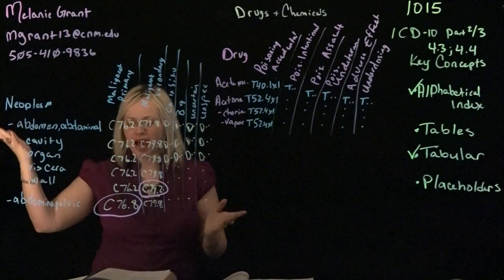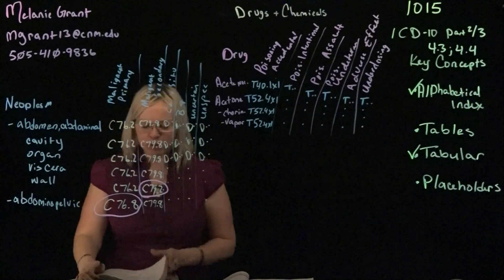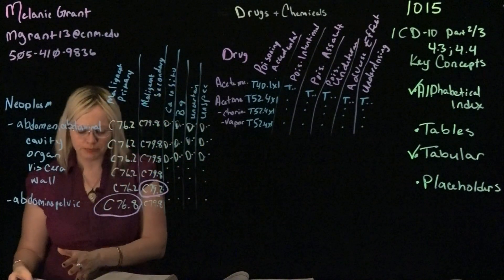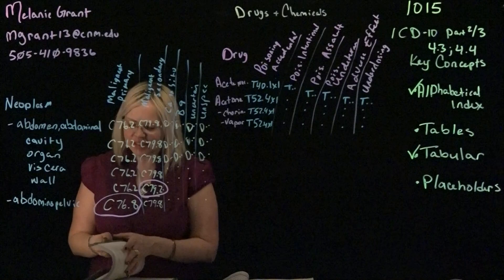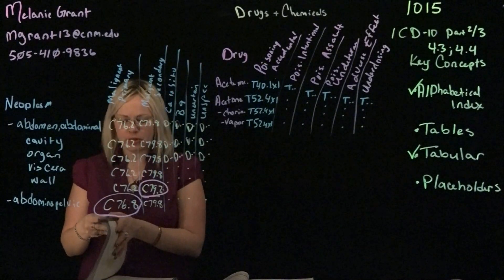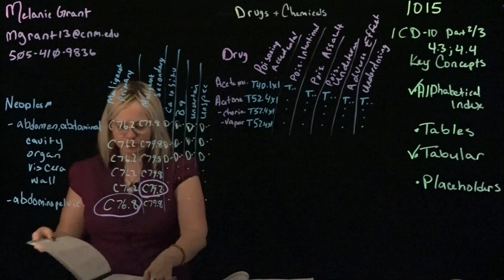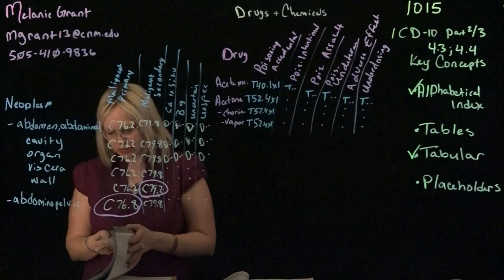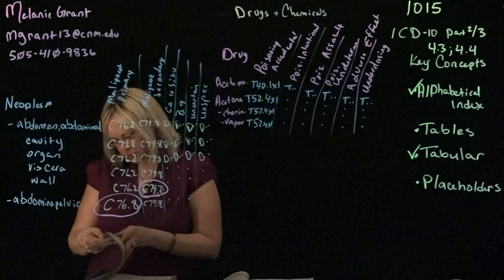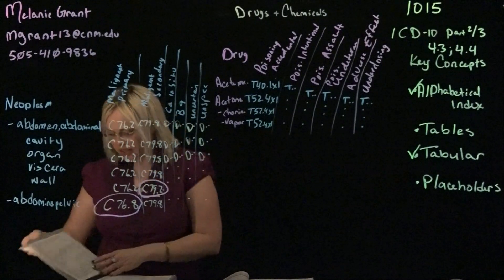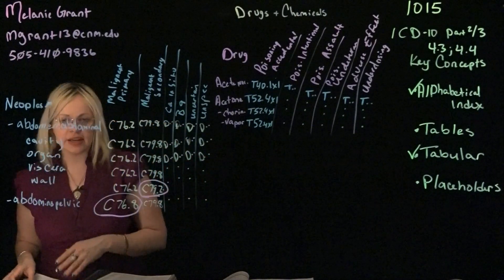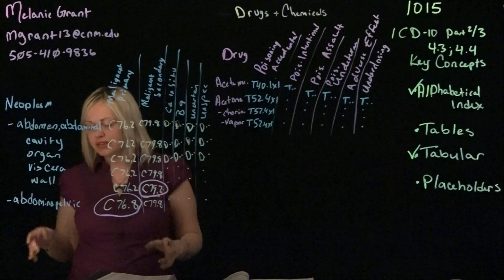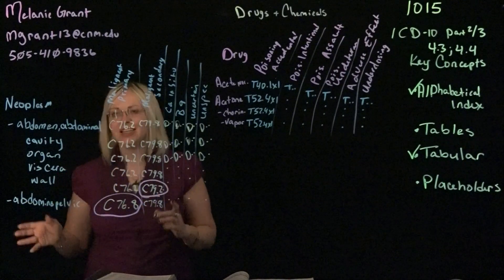So neoplasms, how does it work? First you want to go into your alphabetical, and at the end of the alphabetical, you have your tables. The first table is the neoplasm table that would be found, and it's going to be organized with boxes, unlike the regular alphabetical. So you can see it like a table.